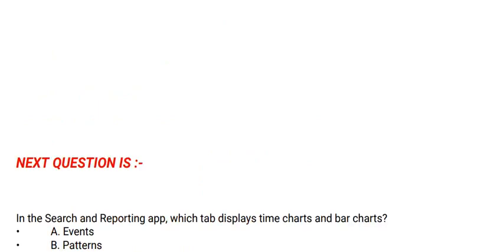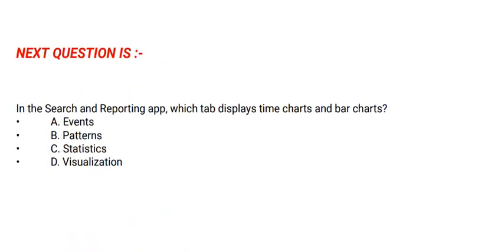Next question: in the search and reporting app, which tab displays time charts and bar charts? Option A: Events. Option B: Patterns. Option C: Statistics. Option D: Visualization. The correct option is option D.